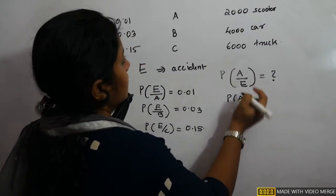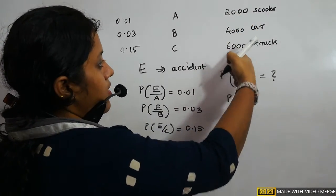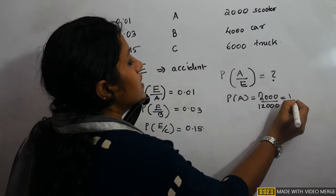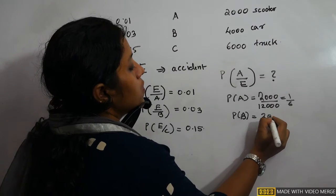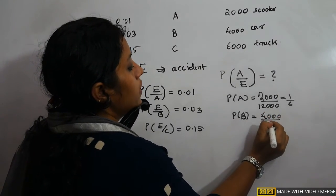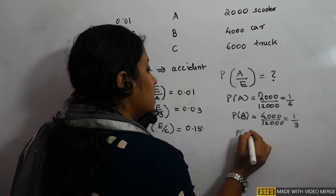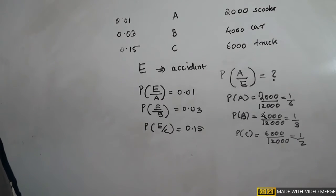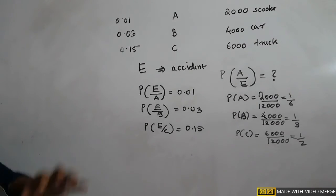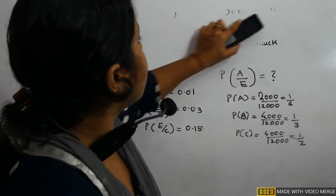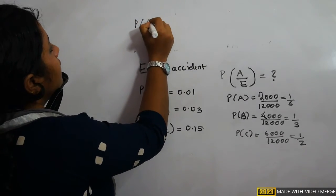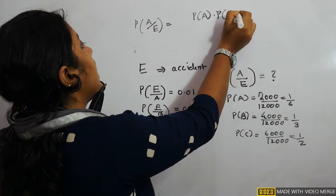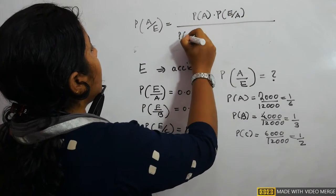Bayes' theorem: P(A|E) = [P(A) · P(E|A)] / [P(A)·P(E|A) + P(B)·P(E|B) + P(C)·P(E|C)]. Substituting: numerator = (1/6) × 0.01.